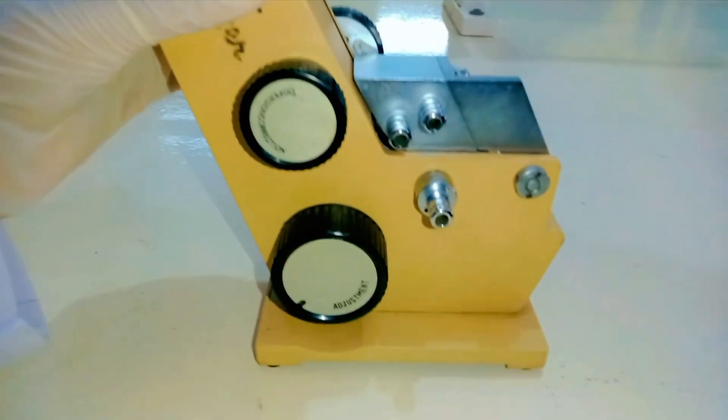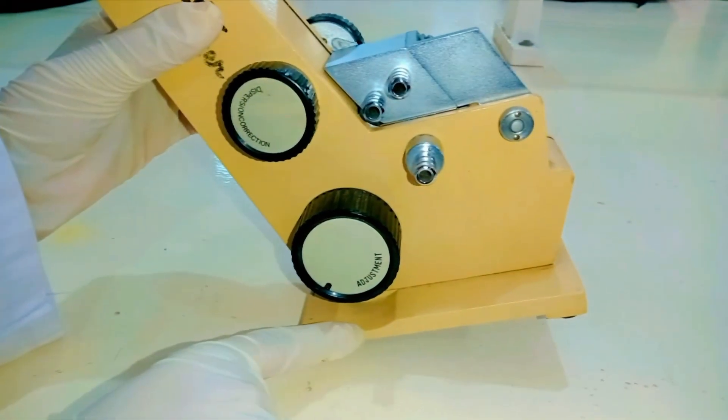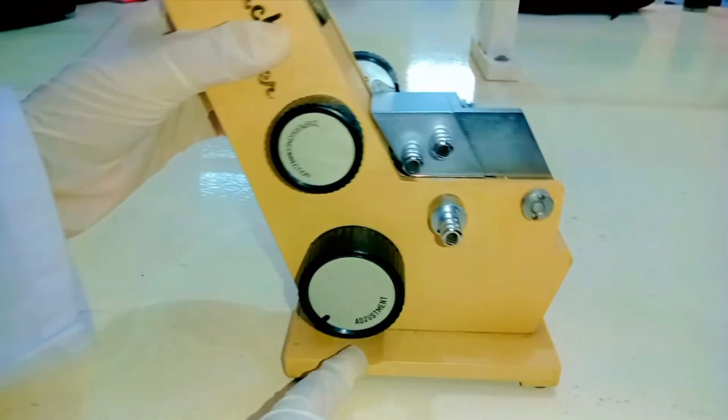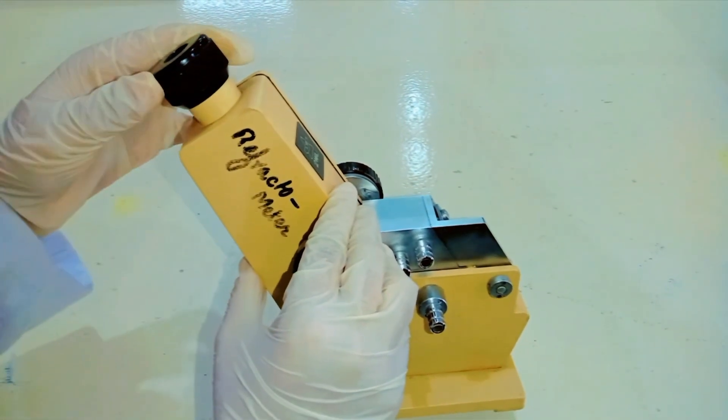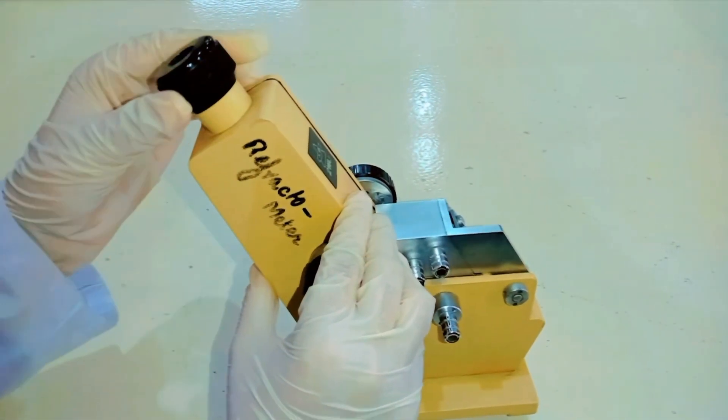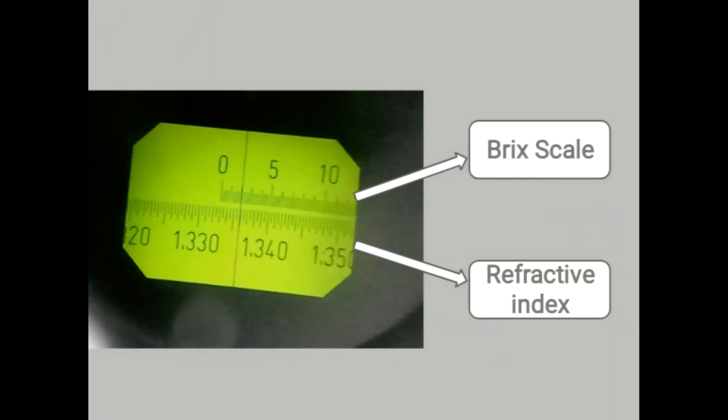This is the base of refractometer that supports the whole body. Here is the eyepiece - you can easily clear your view by rotating it. Inside the eyepiece, there is a telescope. As you look into it, there is a crosshair image and a scale. The scale is calibrated and its lower side gives refractive indices, whereas the upper part scale is called Brix scale. It gives sugar concentration of sugar solutions.